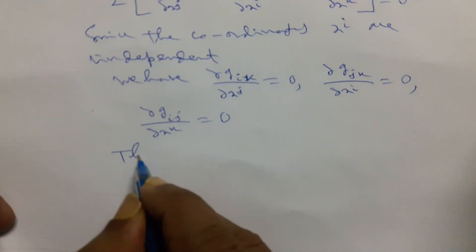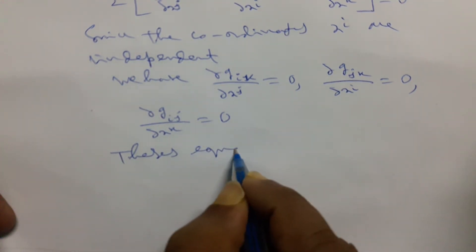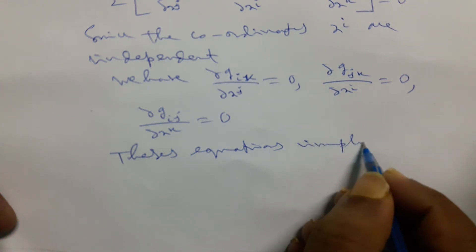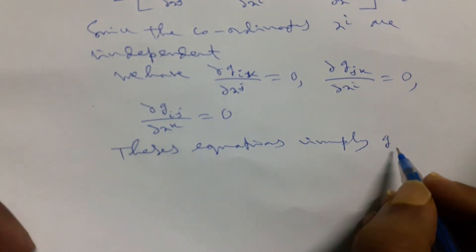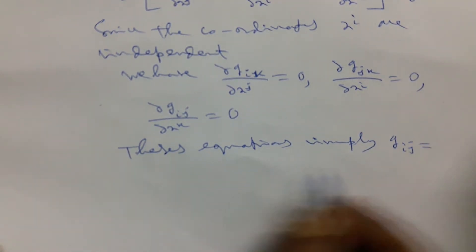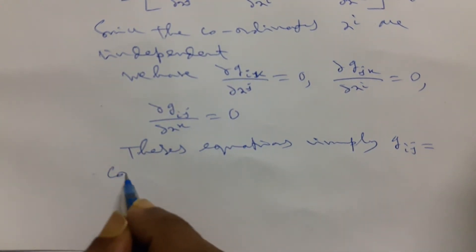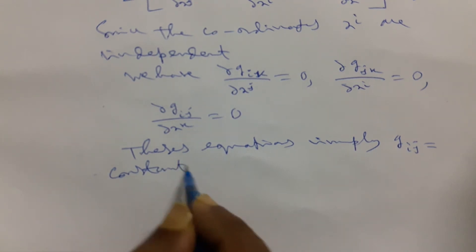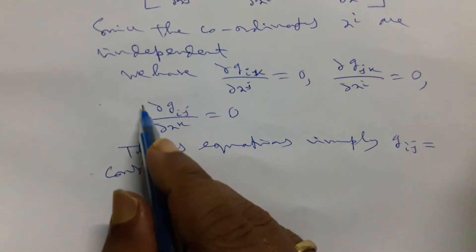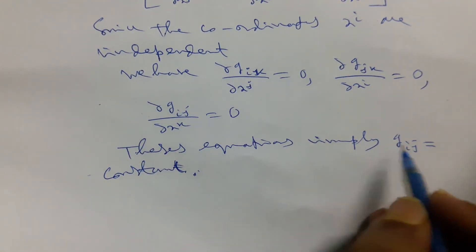All these equations imply Gij is constant and it is clear. Since this term is 0, so it is a constant.